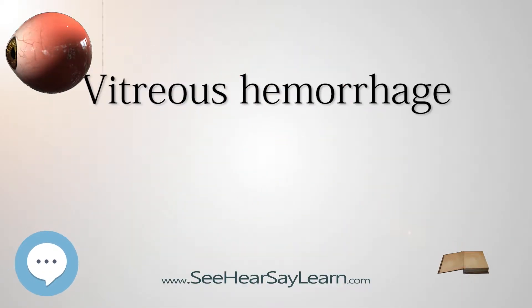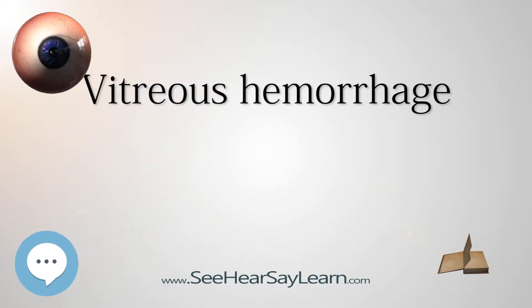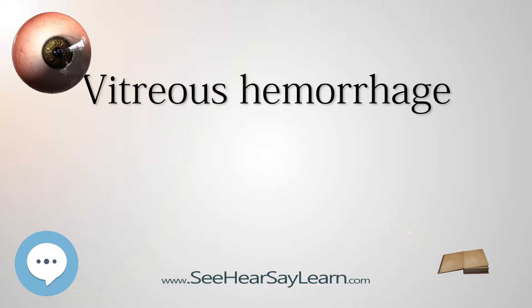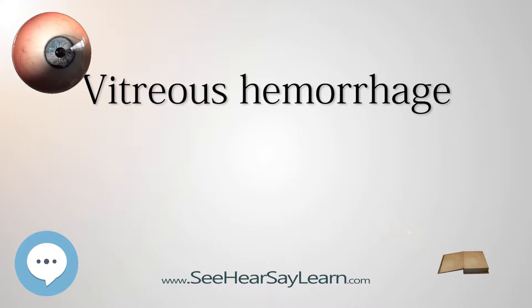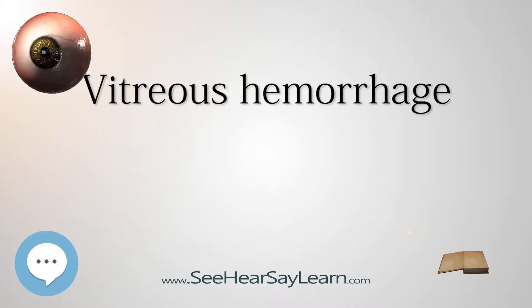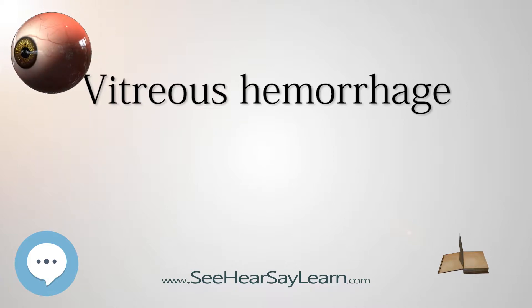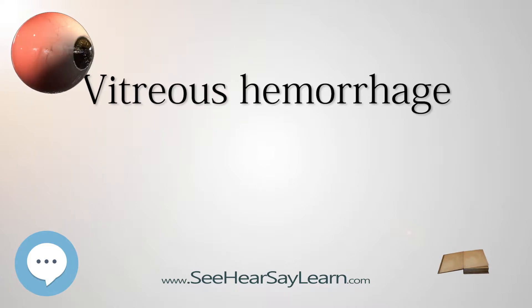Vitreous hemorrhage is the extravasation, or leakage, of blood into the areas in and around the vitreous humor of the eye. The vitreous humor is the clear gel that fills the space between the lens and the retina of the eye. A variety of conditions can result in blood leaking into the vitreous humor, which can cause impaired vision, floaters, and photopsia.